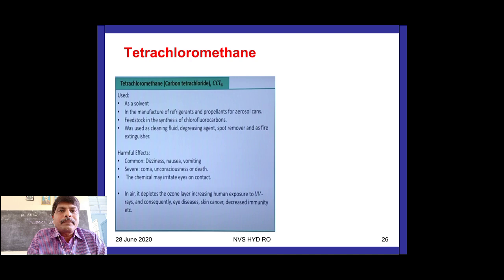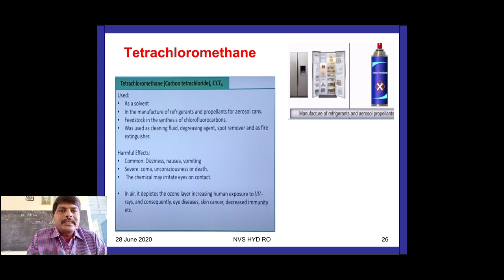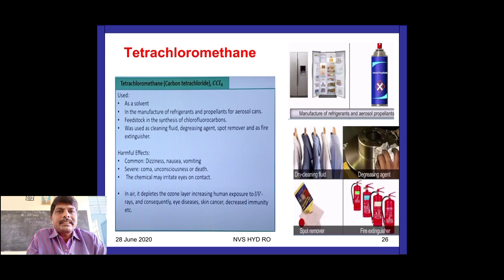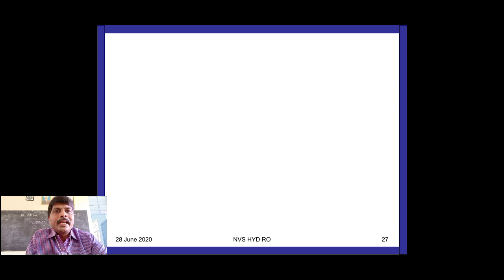Next: carbon tetrachloride (CCl4). Main uses: solvent, manufacture of refrigerants and propellants for aerosols, and as a feedstock in the synthesis of CFCs. Harmful effects: dizziness, nausea, vomiting, coma, unconsciousness, or death; the chemical irritates eyes; and in the atmosphere it depletes the ozone layer.